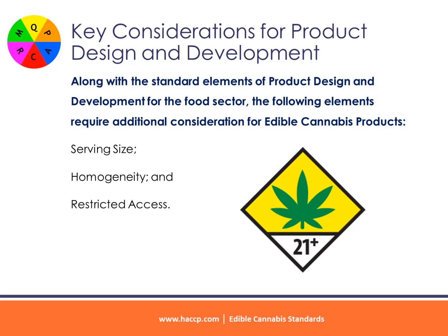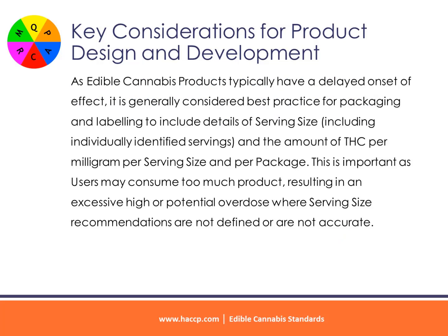Key considerations for product design and development: along with the standard elements of product design and development for the food sector, the following elements require additional consideration for edible cannabis products — serving size, homogeneity, and restricted access. As edible cannabis products typically have a delayed onset of effect, it is generally considered best practice for packaging and labeling to include details of serving size, including individually identified servings and the amount of THC per milligram per serving size and per package.